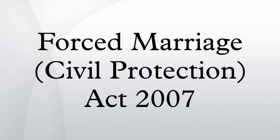The Forced Marriage Act 2007 is an act of the Parliament of the United Kingdom. It seeks to assist victims of forced marriage, or those threatened with forced marriage, by providing civil remedies. It extends to England and Wales and Northern Ireland; it does not extend to Scotland, as this is a devolved competence.